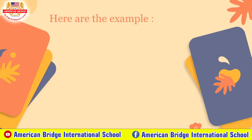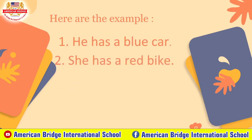Number one: 'He has a blue car.' He is singular, so we use 'has.' Number two: 'She has a red bike.' She is also singular, so we use 'has.' Number three: 'They have blocks.' They is plural, so we use 'have.' So we have three sentences as examples for today.